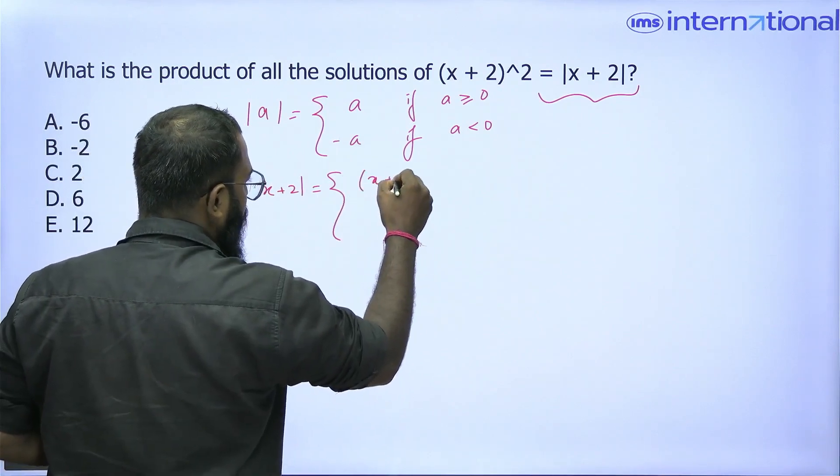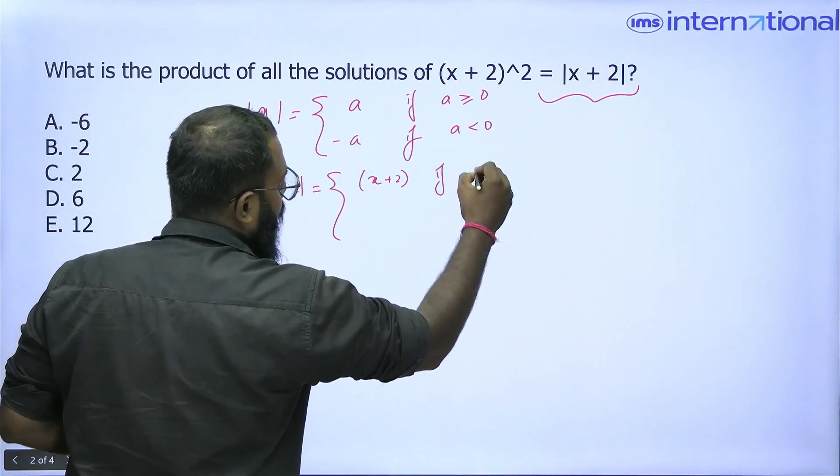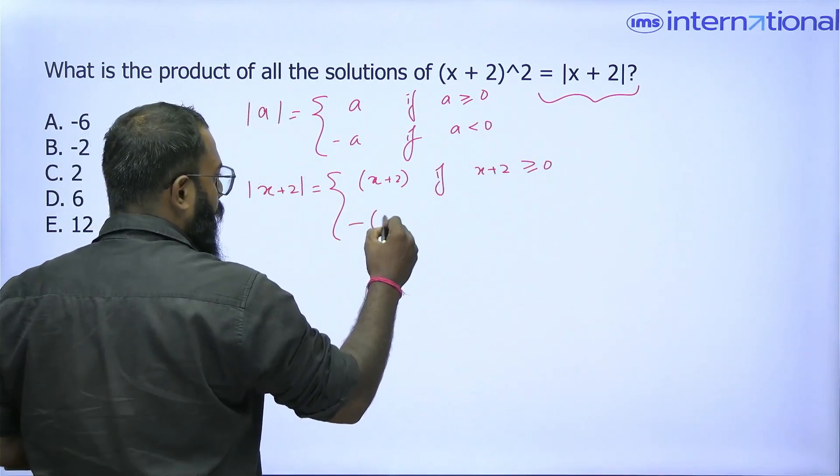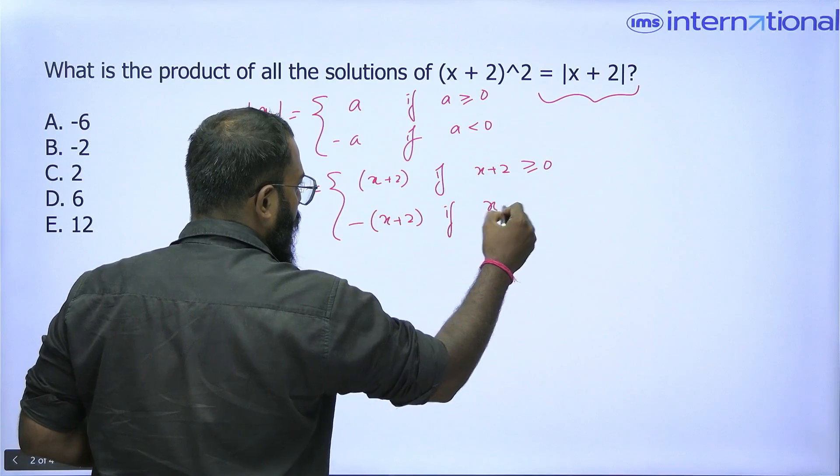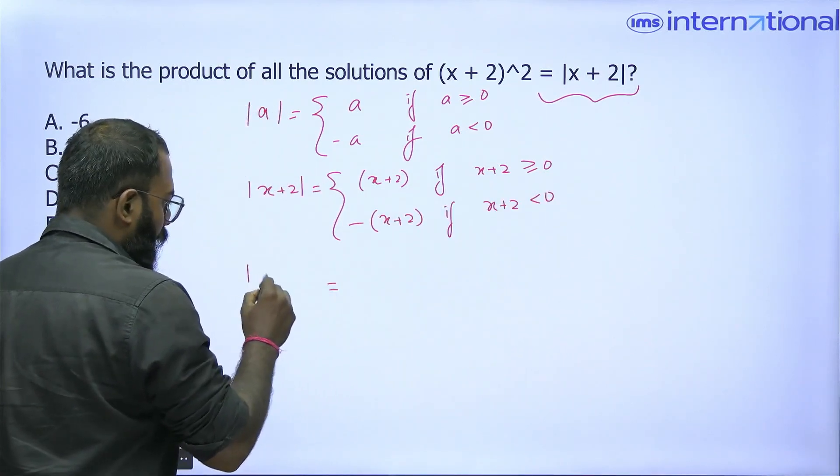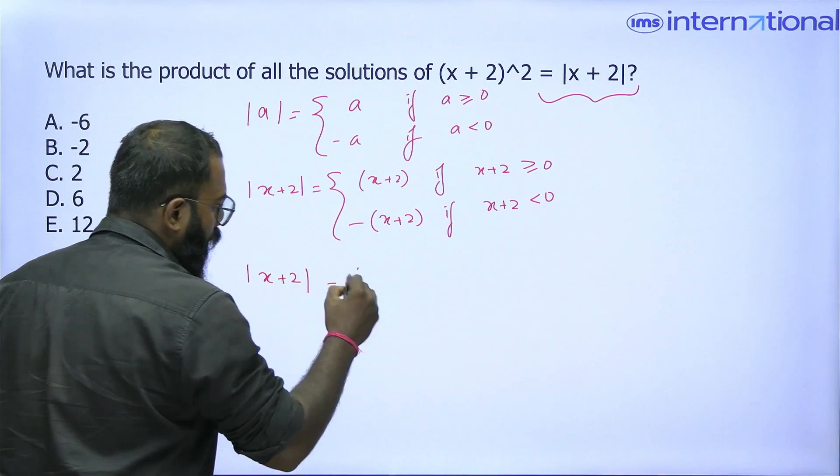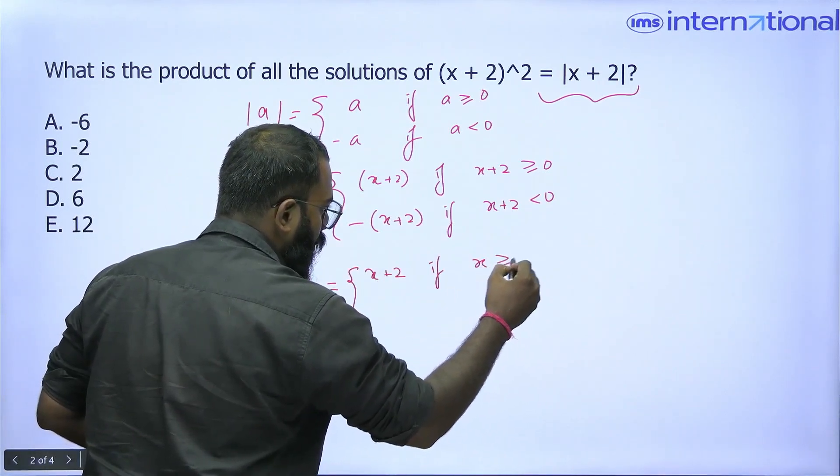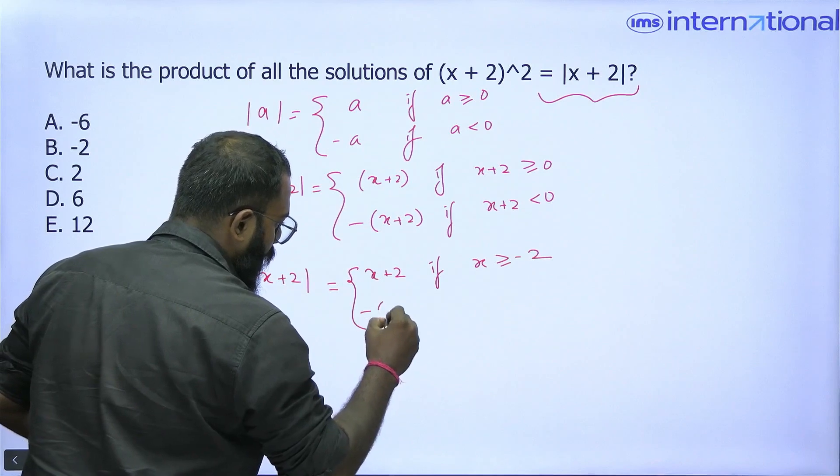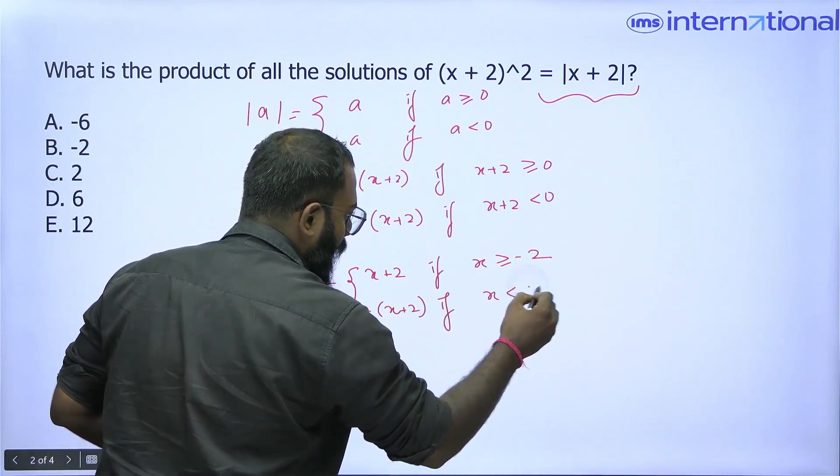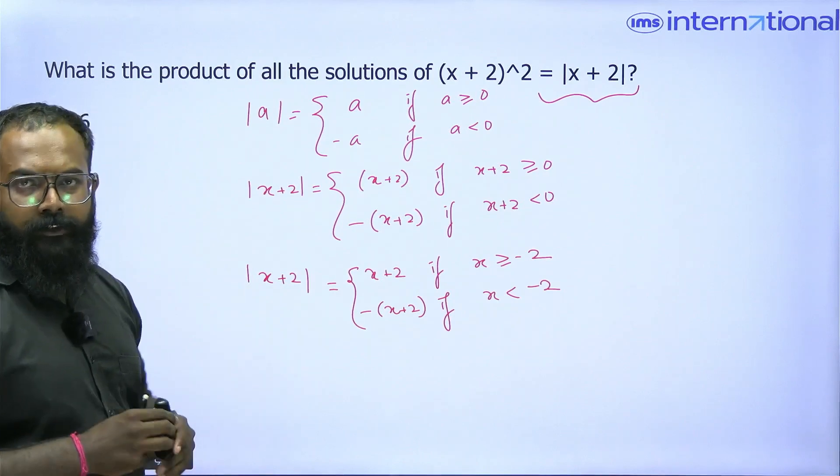One is x plus 2 when x plus 2 is greater than or equal to 0, and minus of x plus 2 if x plus 2 is less than 0. That means mod of x plus 2 equals x plus 2 if x is greater than or equal to minus 2. So I have two different cases to deal with. Let's start.